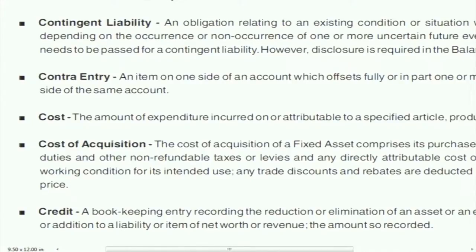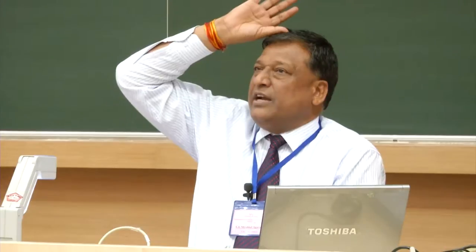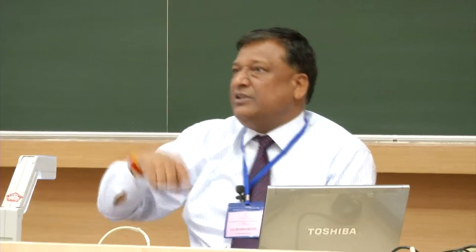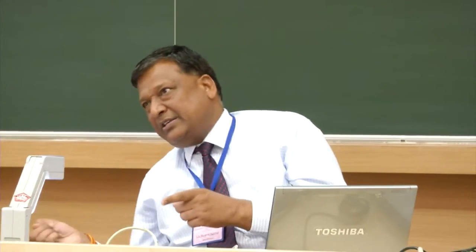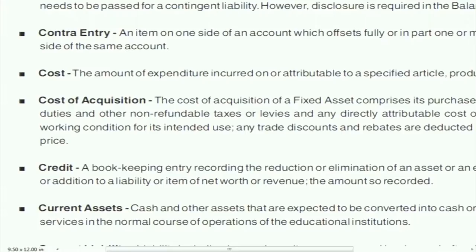Contra entry: one entry covers the other entry. For example, a stale check — one check is cancelled and one check is issued, so you have to make a new check. Both sides cancel each other out, and that becomes the contra entry.